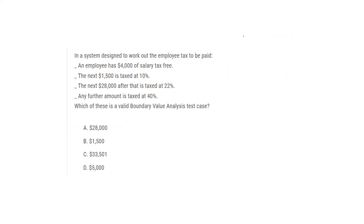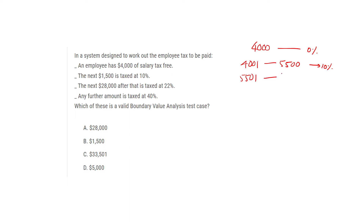Here is a similar question with four salary tax statements. Up to 4,000 salary is tax-free — 0%. The next 1,500 (4,001 to 5,500) is 10%. The next 28,000 (5,501 to 33,500) is 22%. Anything greater than that is 40%.